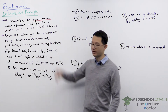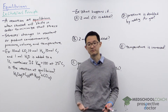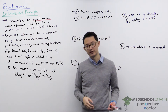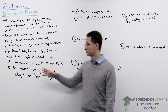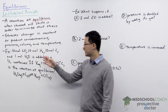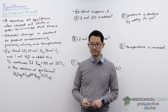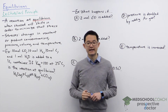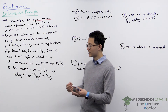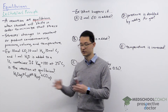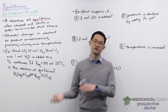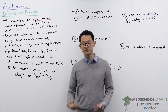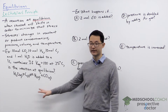What do we mean by a stress? There are several different types of stresses we can introduce in a reaction, and these include changes in the concentrations of the reactants or products, changes to the pressure or volume, and changes to the temperature of the system. The reaction will shift in order to minimize that stress — either to the left, proceeding in the reverse direction, or to the right, proceeding in the forward direction.